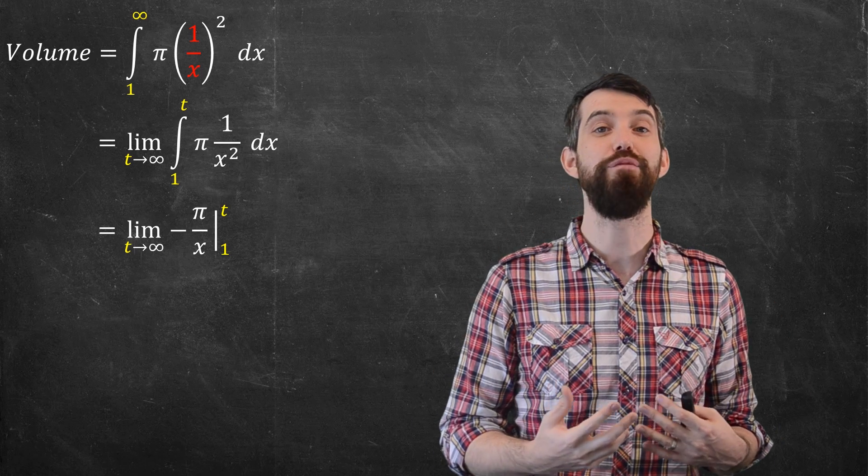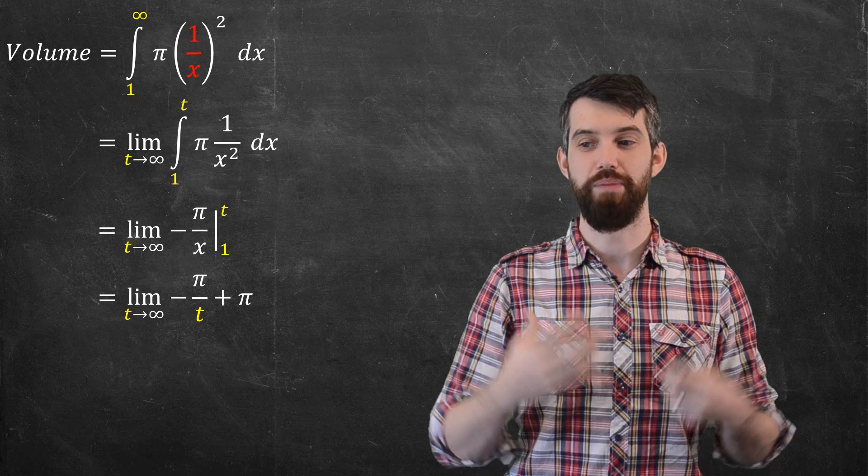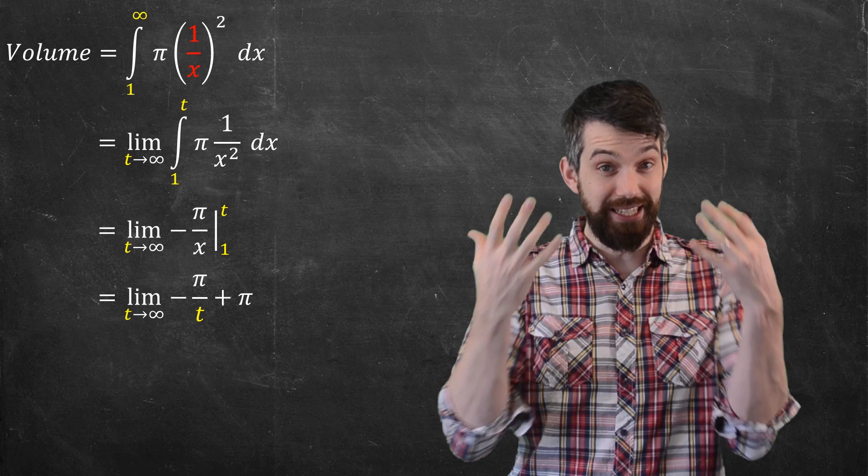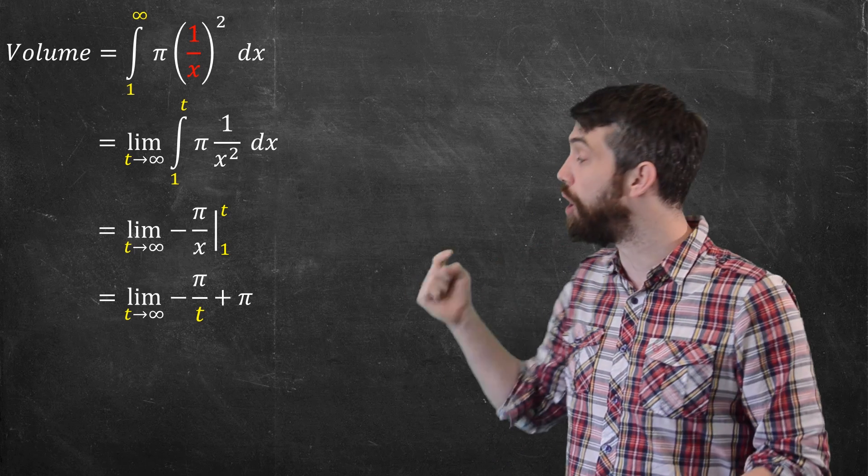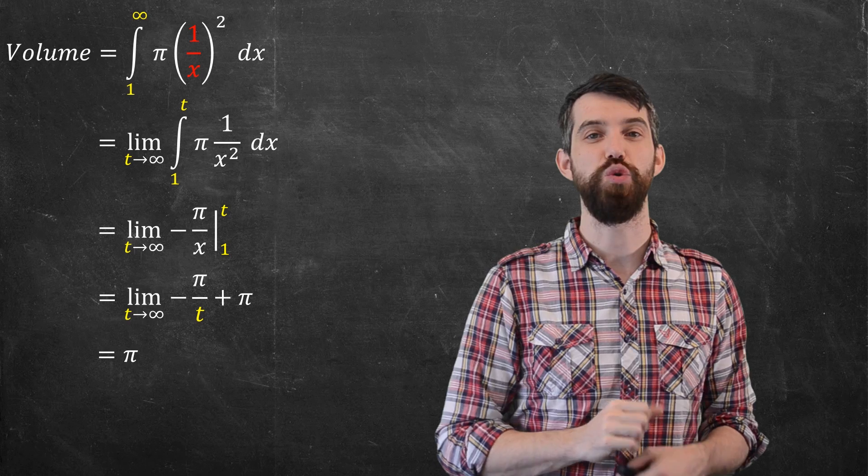What am I going to get? The limit as t goes to infinity of minus pi over x, evaluated between t and 1. I can plug those numbers in, and I can take t to infinity. Because the t is on the bottom, it goes to 0. And I just get the value of pi.